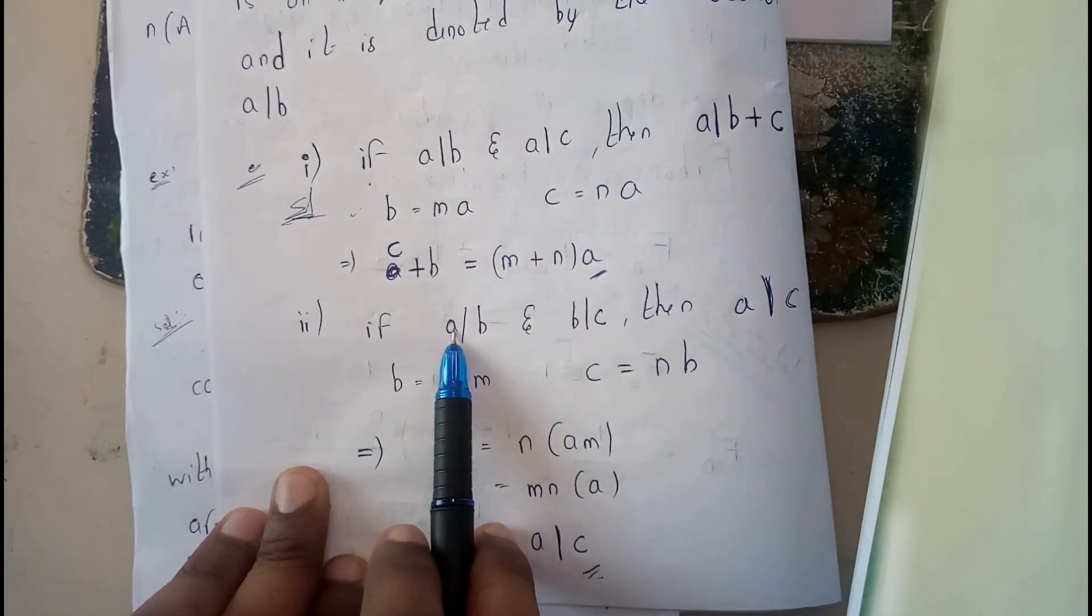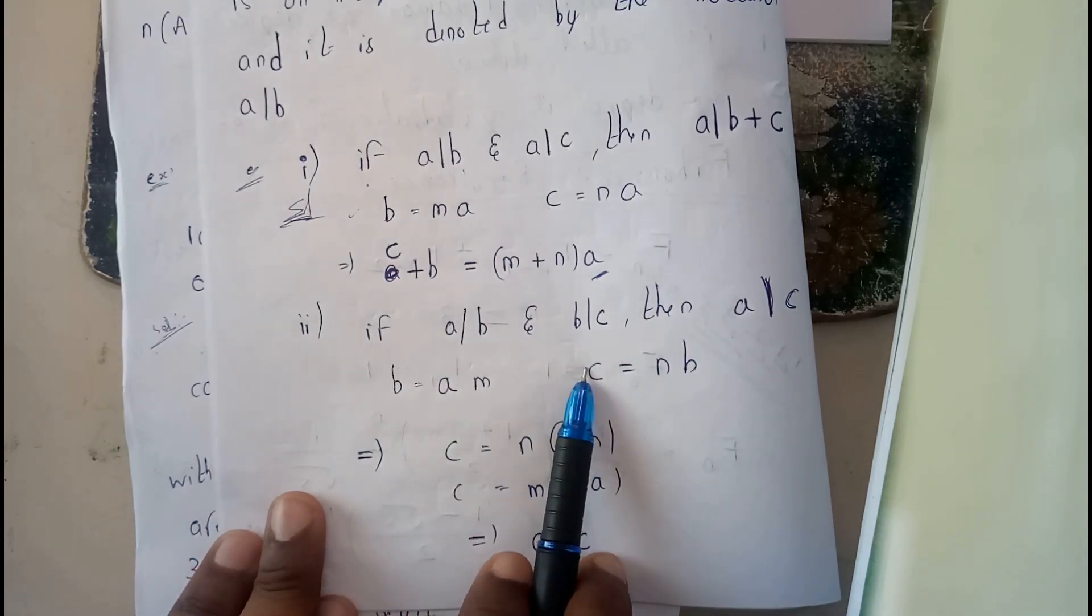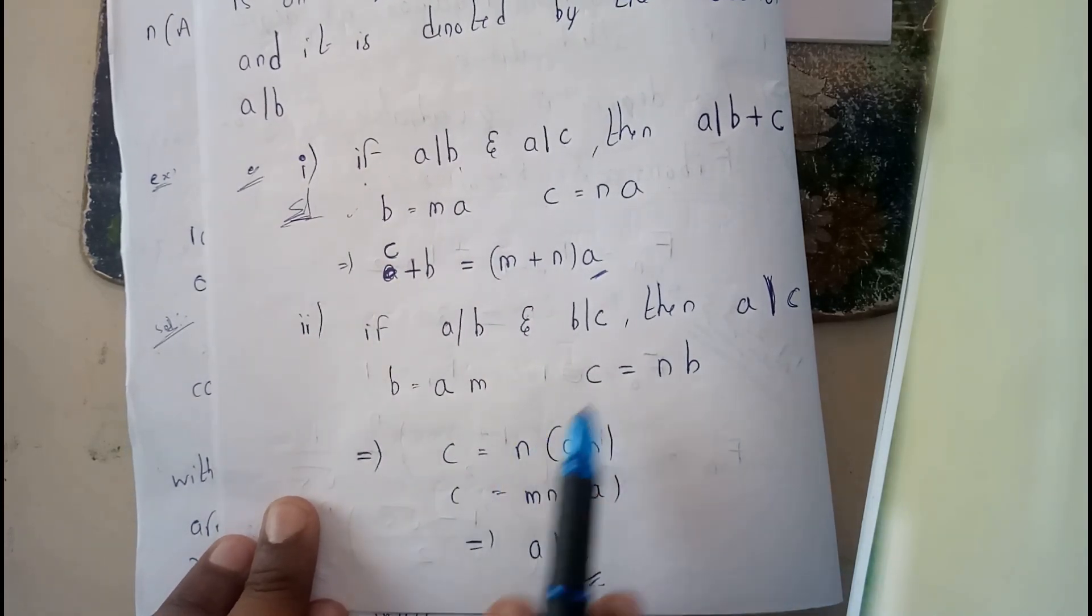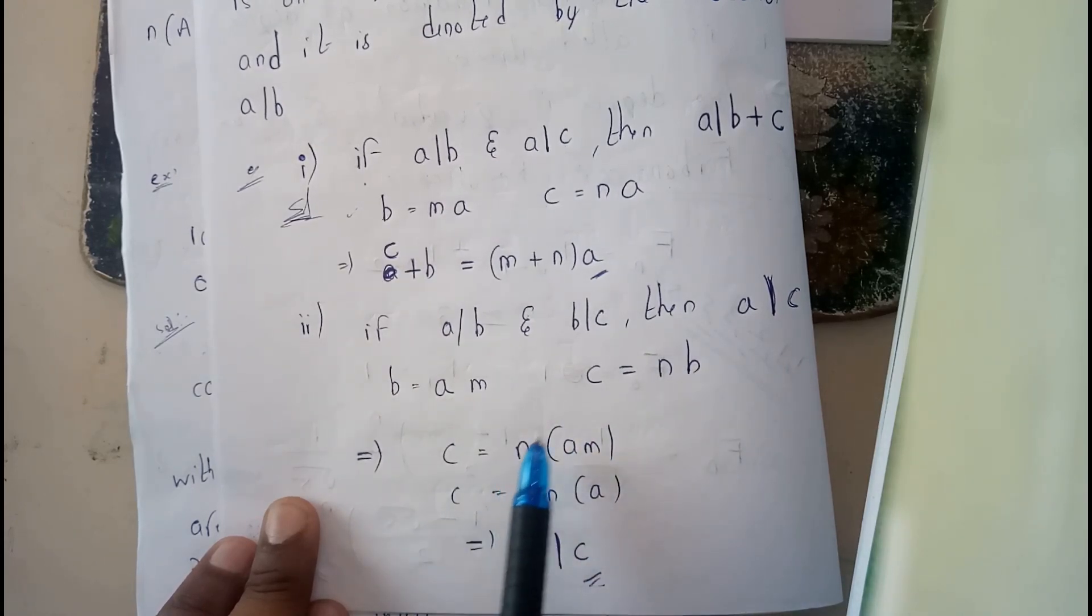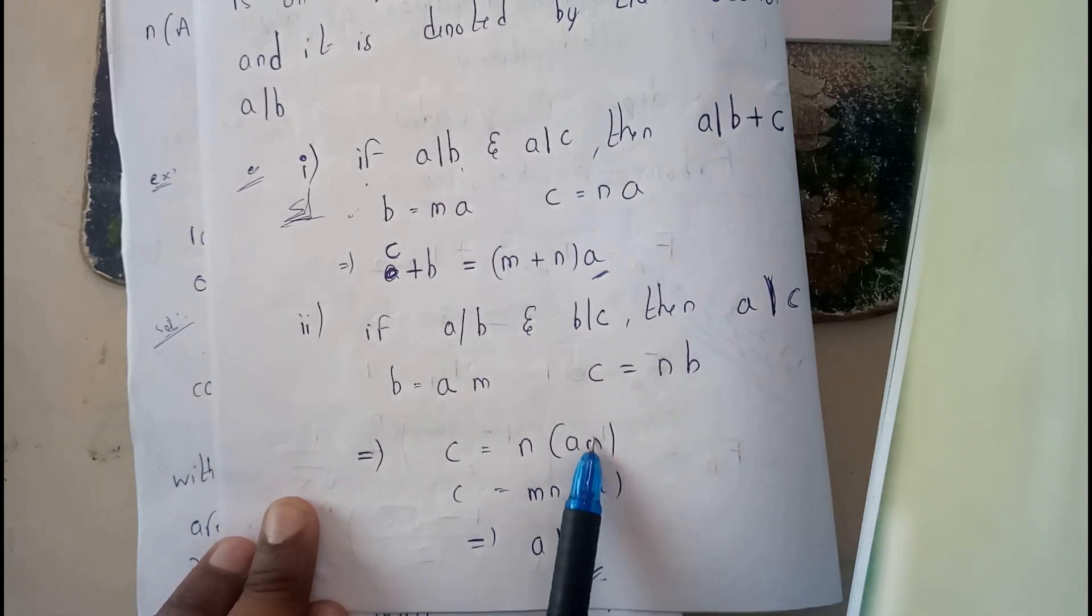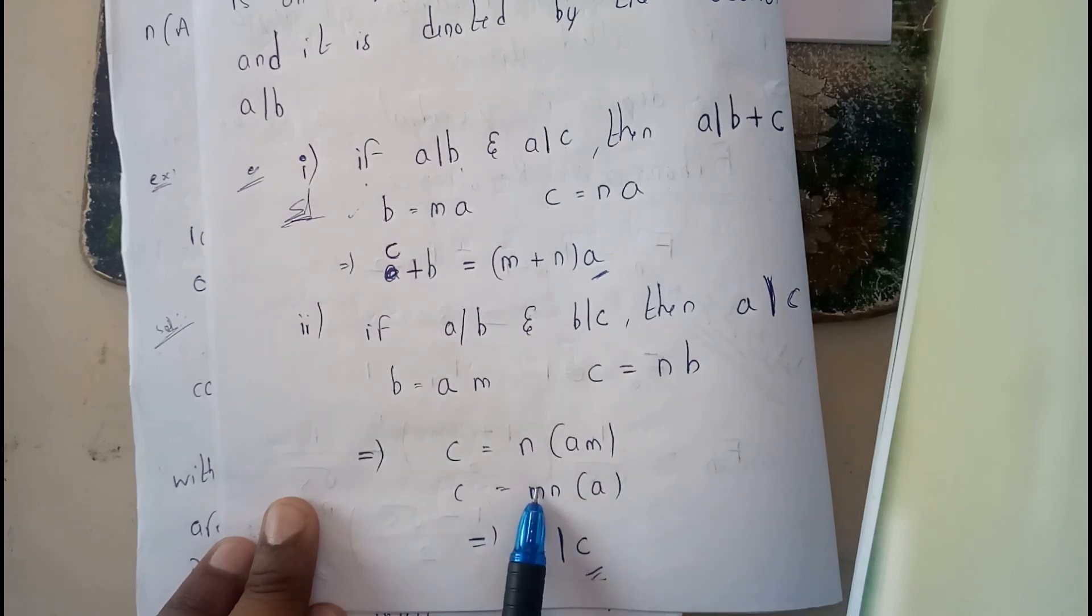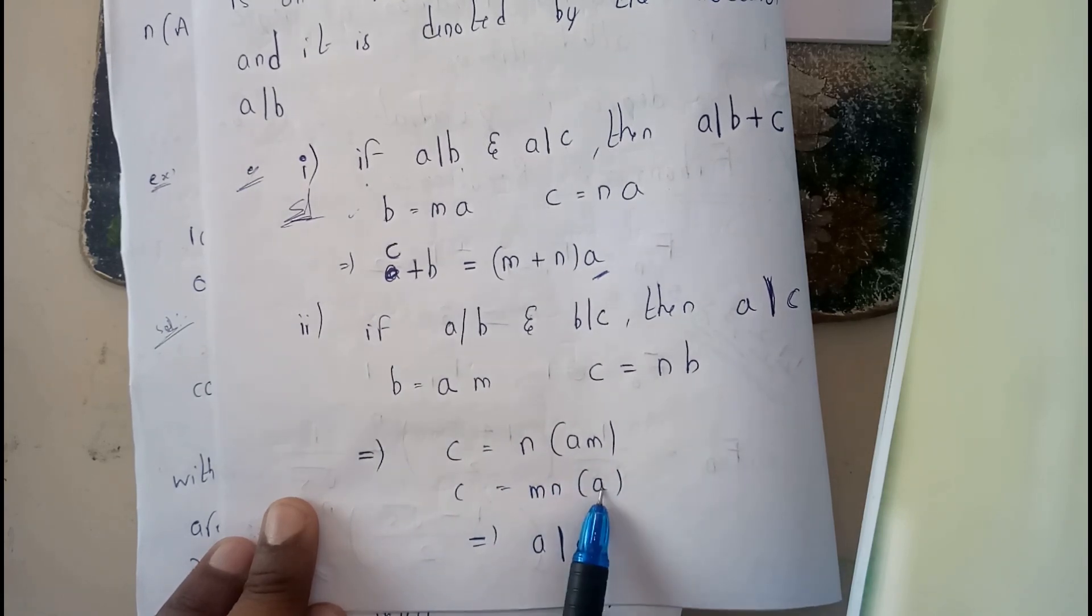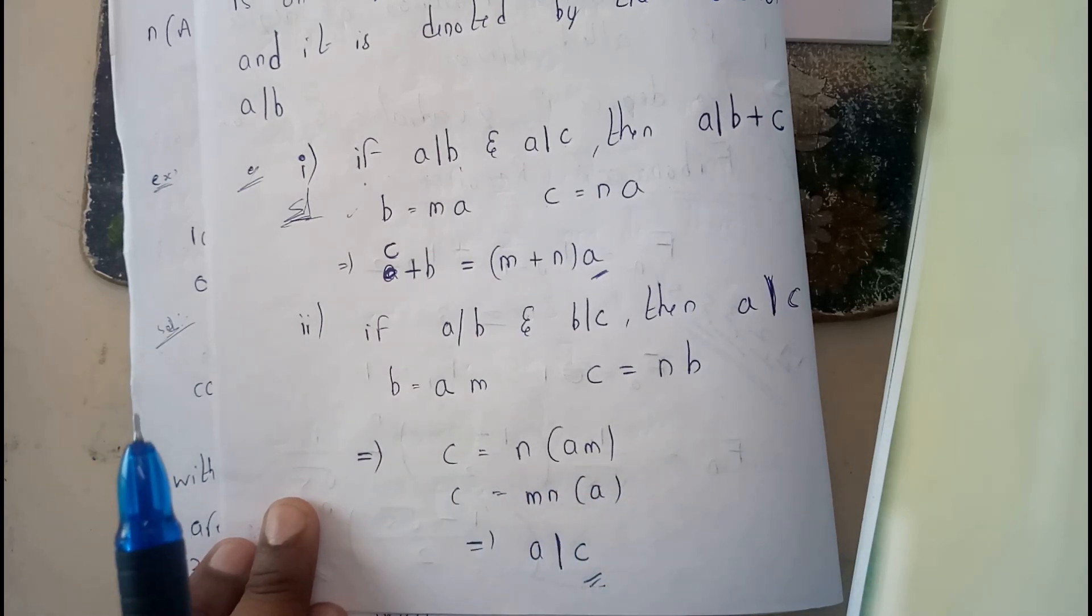So b equals m times a, and c equals n times b. Therefore c equals n times (m times a). I will be taking this m out, so c equals (mn) times a. So mn is a value such that if we multiply with a we get c. Therefore a divides c also exists.